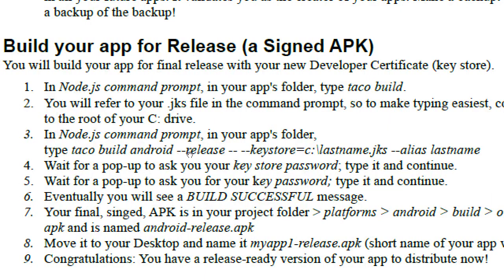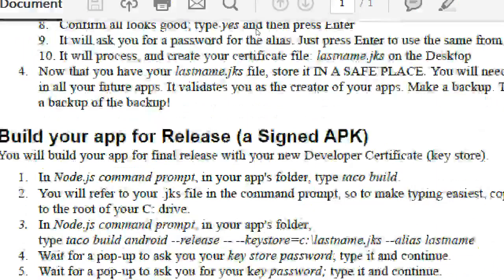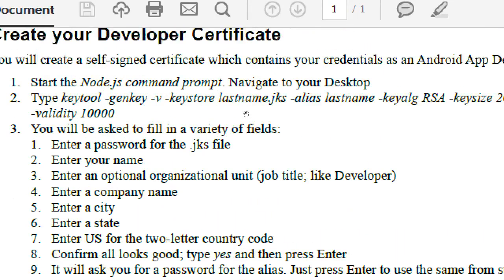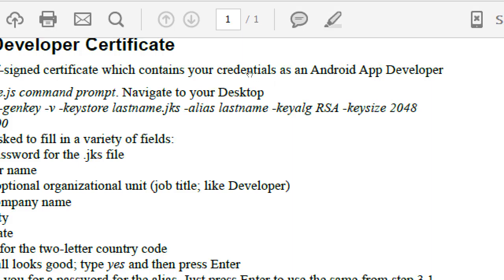The handout says we need to run TACO in build mode — in the section 'build your app for release.' We need to do: taco build android --release. And yes, there are these double dashes. Then --keystore pointing to the key store, space --alias, and then the alias in your key store. If you follow the instructions, I try to keep it simple by using your last name: lastname.jks and then lastname alias.